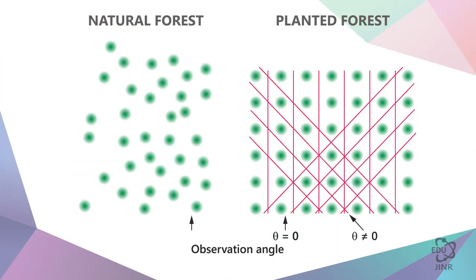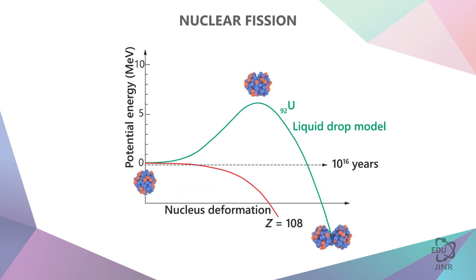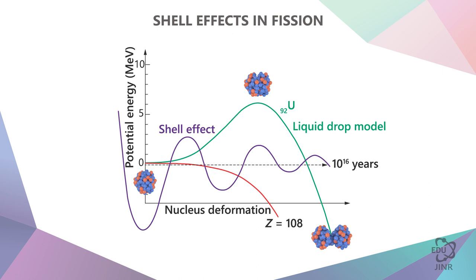This is how the structure works when we start to deform the nucleus. So we have this liquid drop, this structure, and now we have to add another liquid drop along with this correction, which is a structural one.